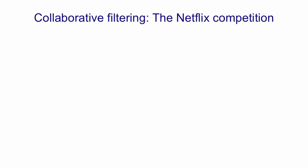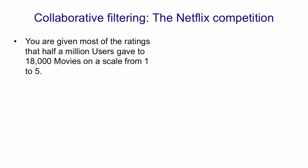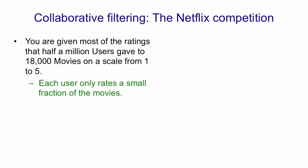Now I'm going to explain how restricted Boltzmann machines were used for collaborative filtering in the Netflix competition. In that competition, you're given most of the ratings that half a million users gave to 18,000 movies, and each movie gets rated on a scale from one to five. Each user only rates a small fraction of the movies, but even so there are about 100 million ratings — quite a big data set.